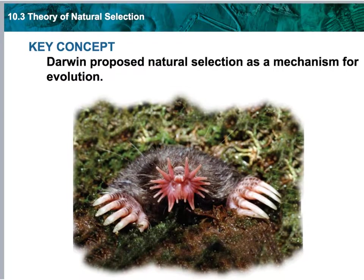Our topic is the theory of natural selection. The key concept is that Darwin came up with an explanation for how evolution occurs. Darwin did not come up with evolution — evolution has been happening. Change over time has been happening. The definition of evolution is change over time. What was unique about Charles Darwin is that he came up with an explanation of how evolution happens, which is natural selection. Natural selection explains how things change over time.